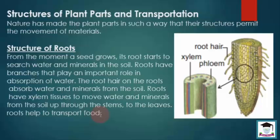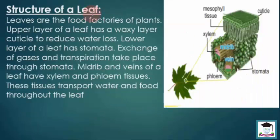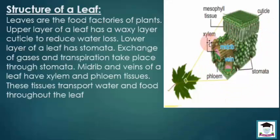Ab next dekhte hain structure of leaves — pode ka jo ek patta hai uska structure kaisa hota hai. Leaves are the food factories of plants — inhe khoraak tayyar karne wali factories bhi kaha jata hai. Jaise ke aap dekh sakte hain, the upper layer of a leaf has a wax layer called cuticle to reduce water loss.